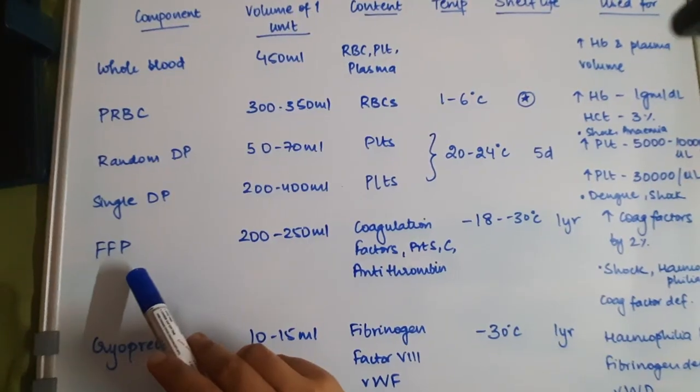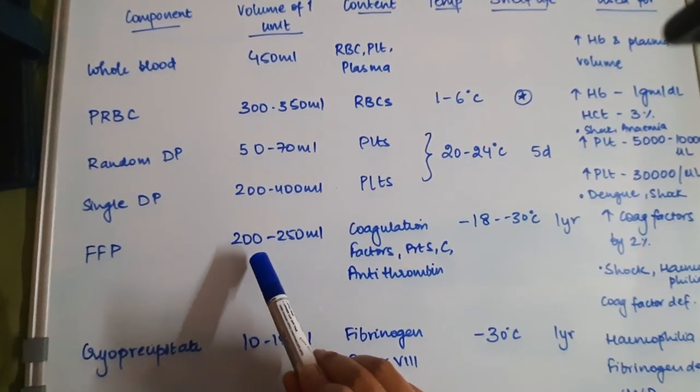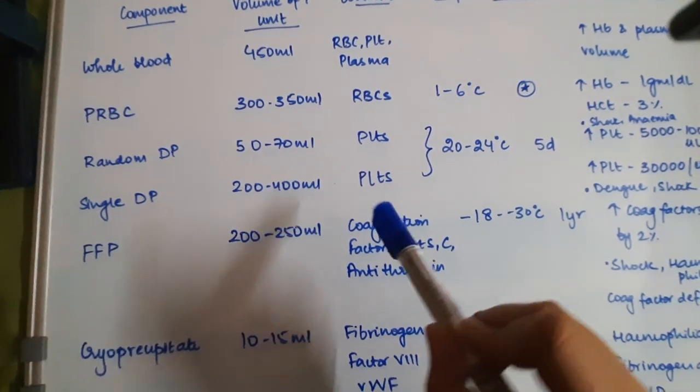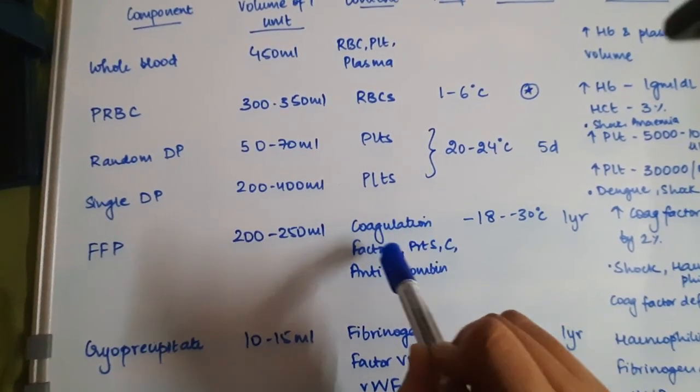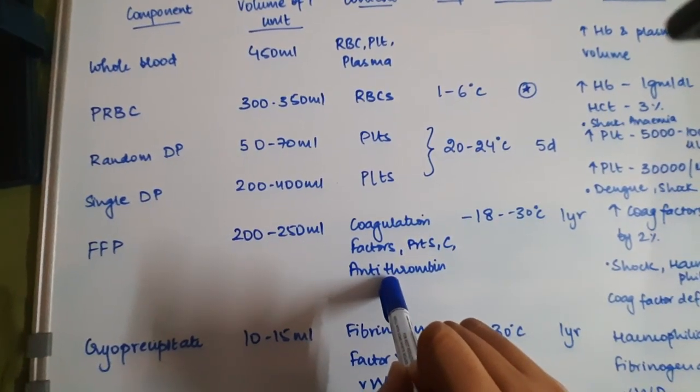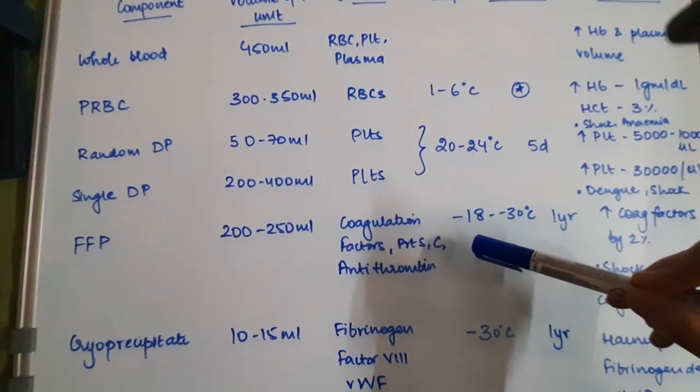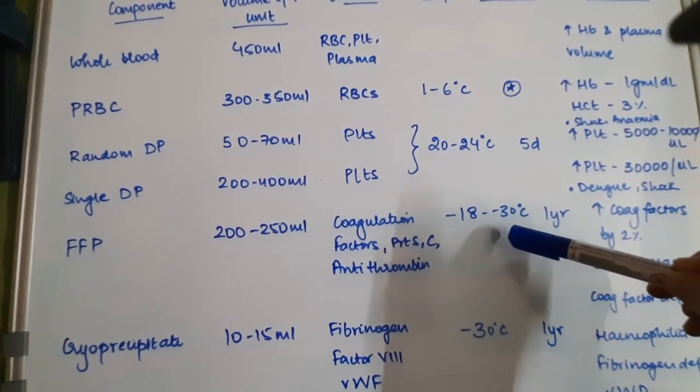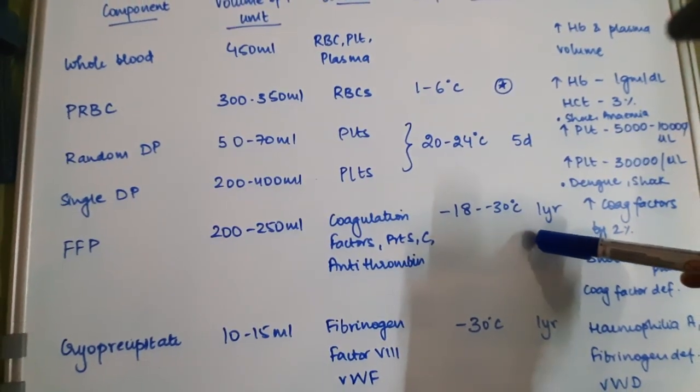In fresh frozen plasma, you have 200 to 250 ml of fresh frozen plasma in one unit, and it consists of all of your coagulation factors along with protein S, protein C, and antithrombin. It is stored at very low temperatures of minus 18 to minus 30 degrees Celsius. Its shelf life is only one year.